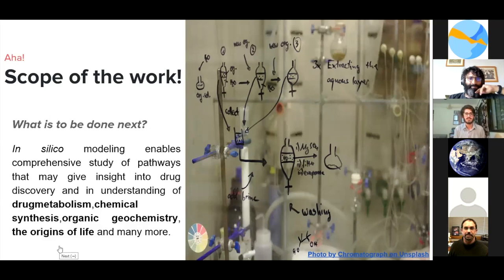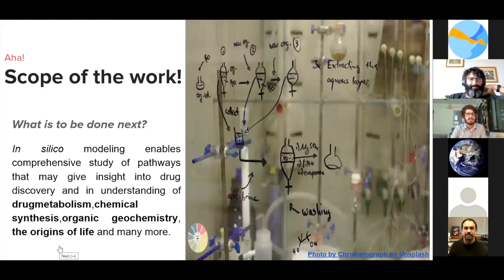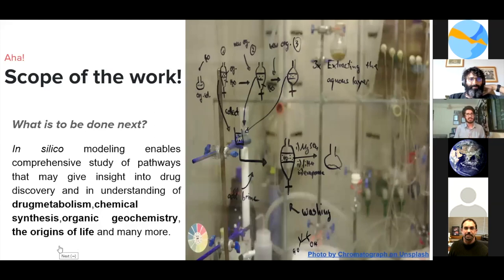What's the future scope of the work? We define in silico modeling, which is used in the study of biochemical pathways — not only in origins of life but also in drug metabolism, organic geochemistry, and chemical synthesis. We aim to define all these pathways and write rules for other reactions beyond glucose — maybe formose, maybe Maillard, and other things. That's our scope of work. With that, I end my talk and am open for questions.